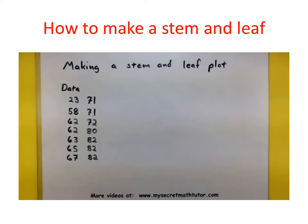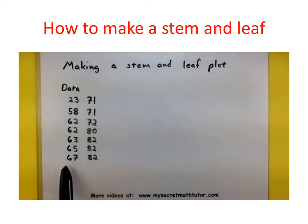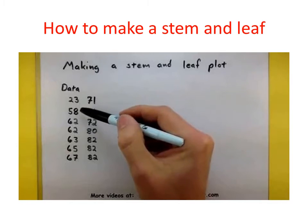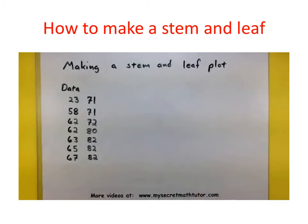Welcome to My Secret Math Tutor. In this example, we are going to make a stem and leaf plot. These are great plots — they give us an idea about the distribution of our data, but they can be a little tricky to make. The idea is we identify the leading values in all of these numbers, and that will become our stem. The other values in the number will become the leaves.